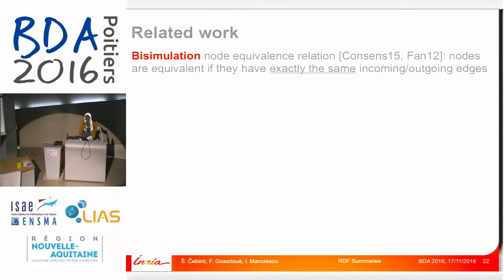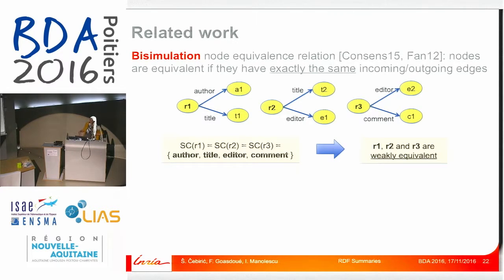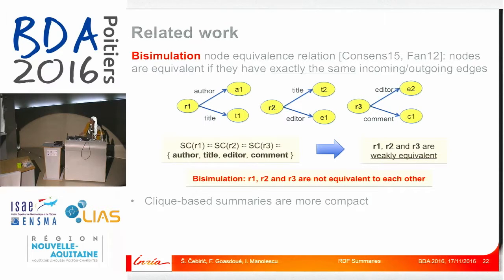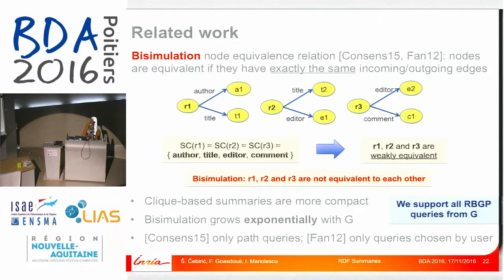Many existing works rely on bisimulation as a node equivalence relation, which says that nodes are equivalent if they have exactly the same incoming or outgoing edges. In our clique-based approach, R1, R2, and R3 are weakly equivalent because of this chain of data properties between them, whereas under bisimulation all of them are equivalent only to themselves. So we summarize more, and clique-based summaries work more in favor of compactness. The main problem with bisimulation-based approaches is that they grow exponentially with the input, so all existing approaches based on bisimulation have to limit themselves in some way. Consense considers only path queries, and FAN — a SIGMOD paper — only considers queries chosen by the user, while here we assume zero user knowledge and support all RBGP queries, generating more compact summaries.